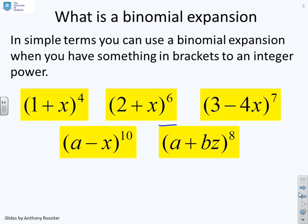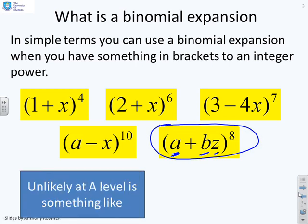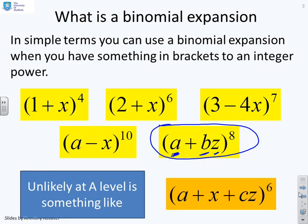Now the key thing to notice is this last one is the most general form. You notice there's an unknown constant A and an unknown constant B and some sort of variable z and an integer power. But it's still a binomial expansion because it has the right form. It's unlikely you will get something with three terms in it, so we're not going to deal with those.